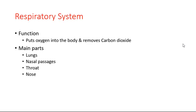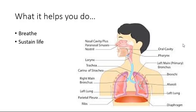The respiratory system puts oxygen into the body and removes carbon dioxide through the process of breathing. The main parts are the lungs, nasal passages, throat, and nose. We need it for breathing to sustain our lives.